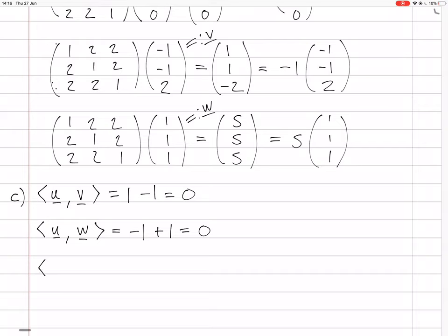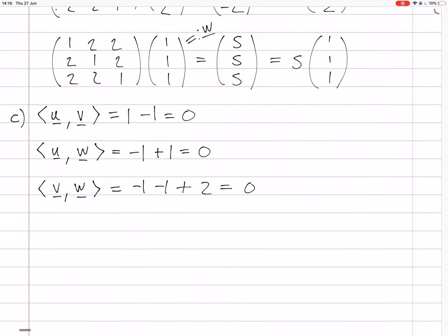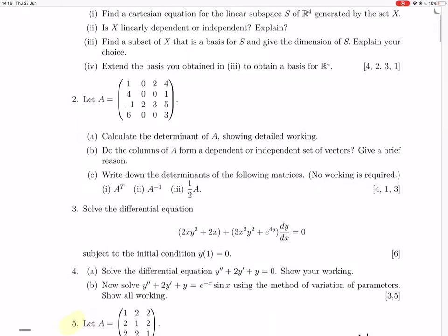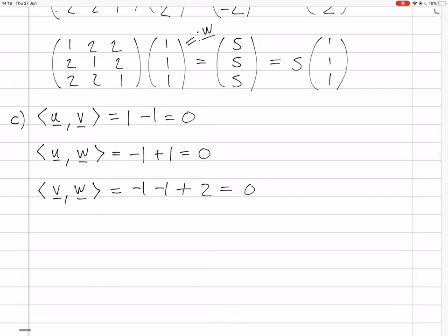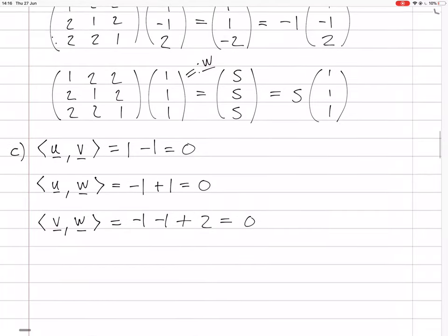And the inner product of V and W is -1 - 1 + 2 = 0. So that's also orthogonal. They are all orthogonal because they all have inner product 0 with each other. The reason I'm glad is because this means I won't have to orthogonalize them.